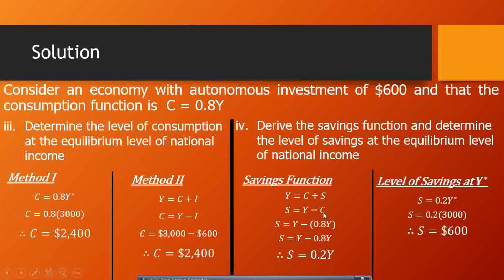Two alternative methods confirm this result. Using S = Y minus C: $3,000 minus $2,400 = $600. Or note that in equilibrium, investment equals savings — since investment is $600, savings will also equal $600.